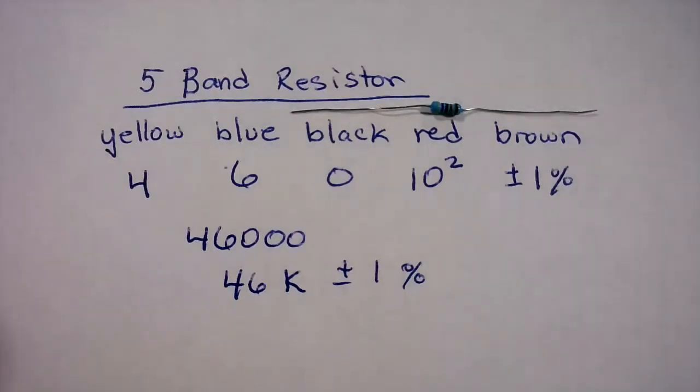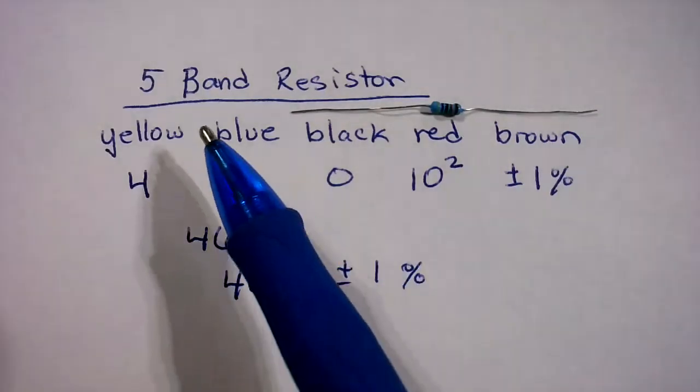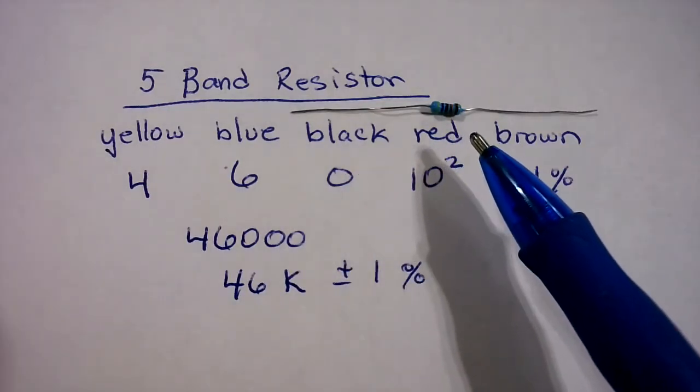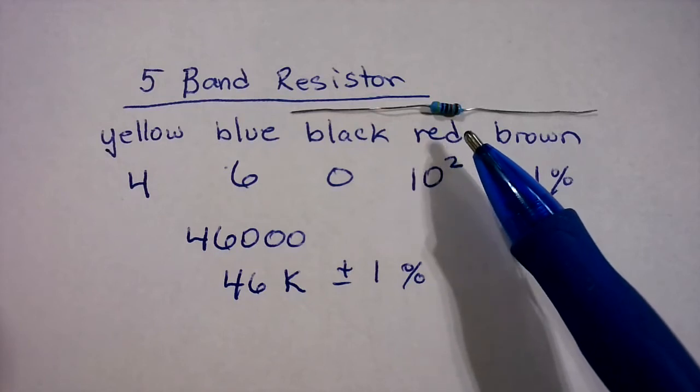How can I tell how much resistance this resistor is? Well, the first thing I need to do is find out if this is a 4 or a 5 band resistor. And I notice that there's 5 bands on it.